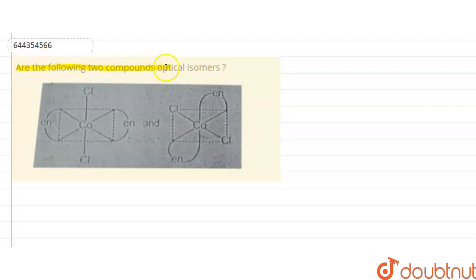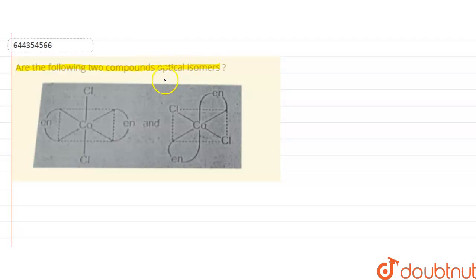Hello students. The question is: are the following two compounds optical isomers? In this question we are given two compounds and it is asked that these are two optical isomers of each other. So what are optical isomers?